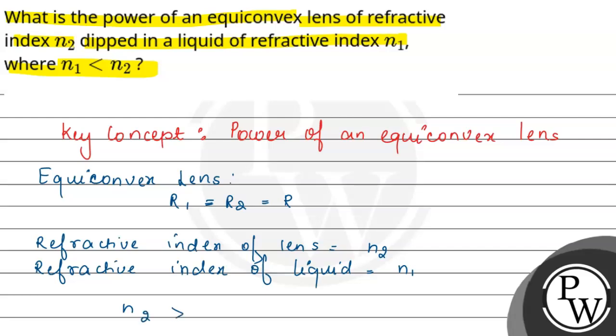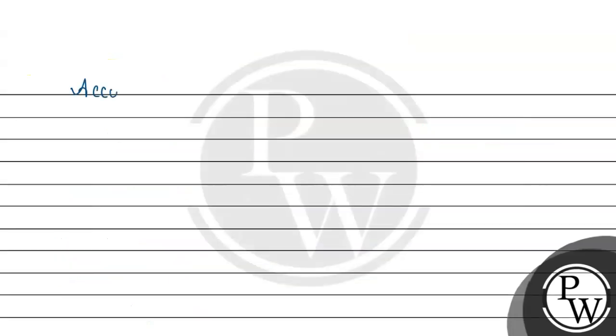According to the lens maker formula for an equiconvex lens, we can say: 1 by F equals N2 minus N1 divided by N1, into 1 by R1 plus 1 by R2.